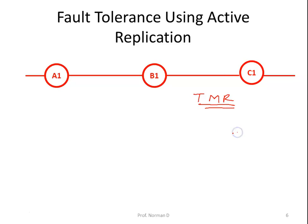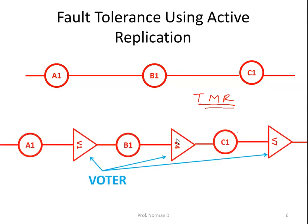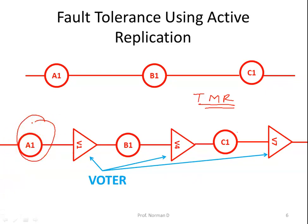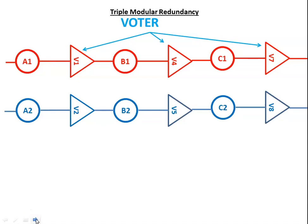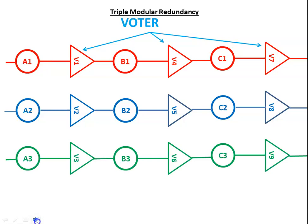In TMR, each device in the circuit is replicated three times. Following each stage in the circuit is a triplicated voter. The voter is a circuit that has three inputs and one output. So we have three replications of the sequence of devices.